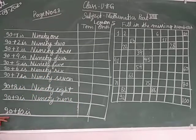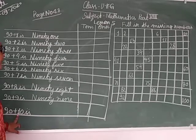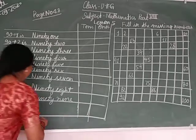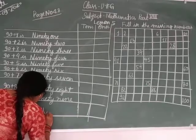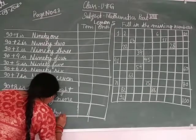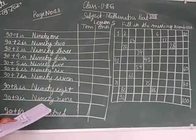And 90 plus 10 is 100. 100. And it's calling it H-U-N-D-R-E-D, 100.